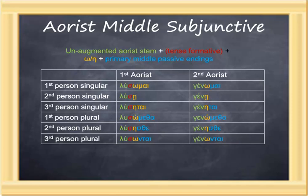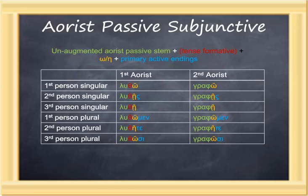The aorist middle subjunctive is formed in a similar fashion, with an unaugmented aorist stem, a tense formative in the case of first aorists but none with second aorists, the long connecting vowel, and primary middle-passive endings. The first person singular first aorist subjunctive middle is λύσωμαι. The first person singular second aorist subjunctive middle is γένωμαι — in this particular case, it's a middle deponent. The aorist passive subjunctive is formed by using the unaugmented aorist passive stem, a tense formative for first aorists but none for the second, the long connecting vowels, and the unusual use of the primary active endings, even though the form is passive. So λυθῶ for the first aorist passive subjunctive, and γραφῶ for the second aorist passive subjunctive.